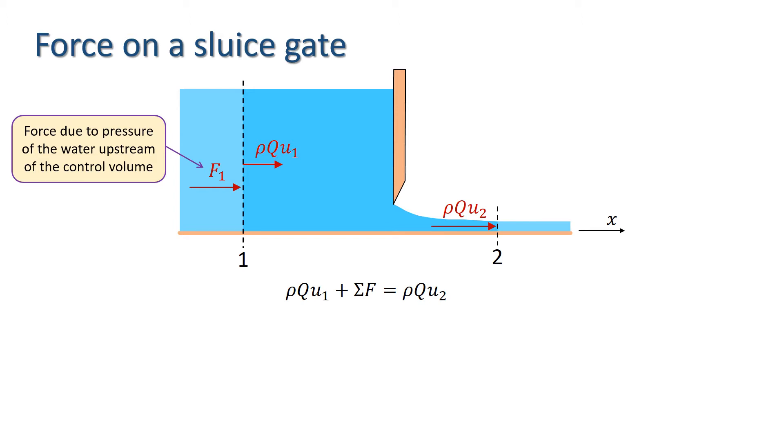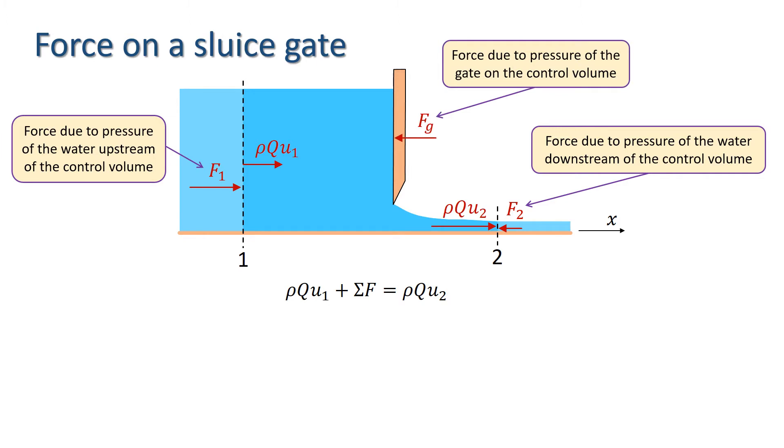And a pressure force at cross-section 2, which is the force due to the pressure of the water downstream of the control volume, denoted F2. And finally, there's the force exerted by the gate on the water, which is here denoted Fg.